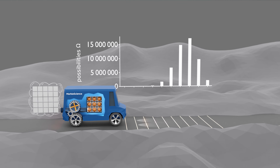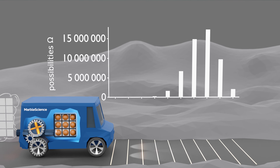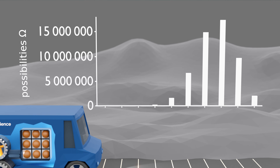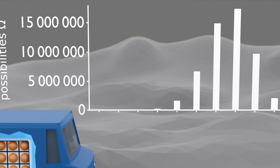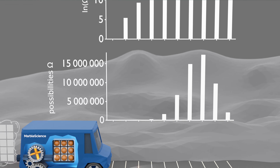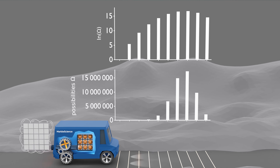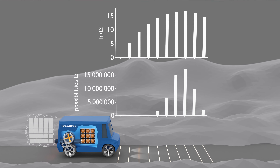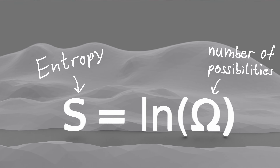I promised we would discover entropy and the second law, and we are almost there. If we take a look at the number of possibilities for the different car locations, working with numbers ranging across multiple orders of magnitude is inconvenient — the first few locations become invisible on a scale that fits the larger numbers. A common trick is to work with the logarithm instead. The graph shows the natural logarithm of the number of possibilities. And this quantity — ln of Ω, the natural logarithm of the number of equally probable possibilities — is called entropy. S = ln Ω. It's as simple as that.